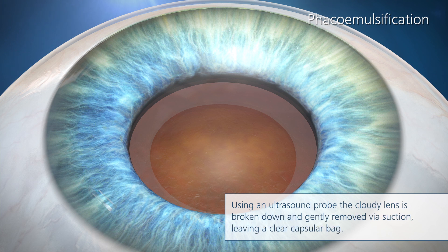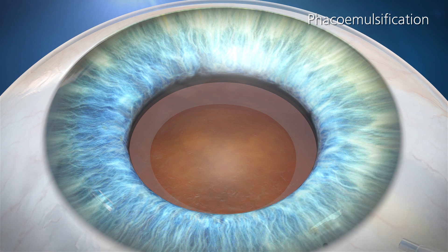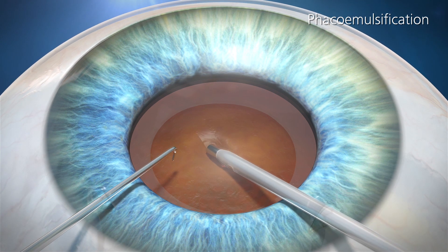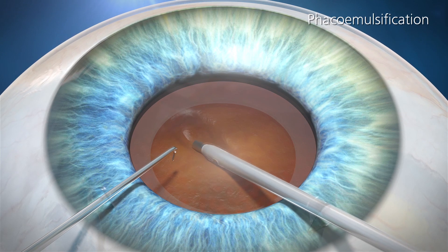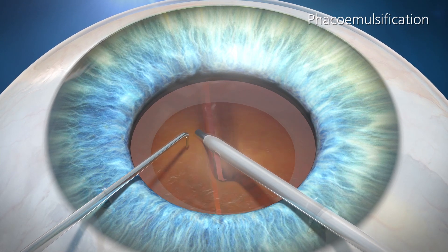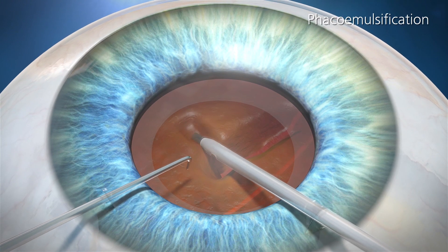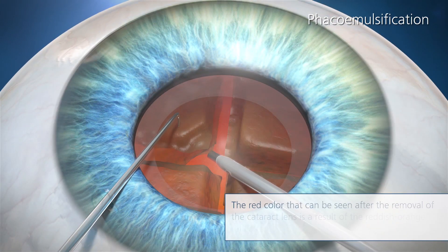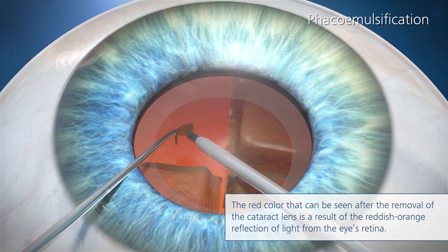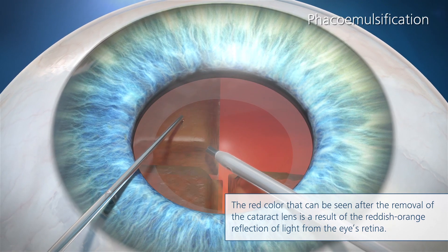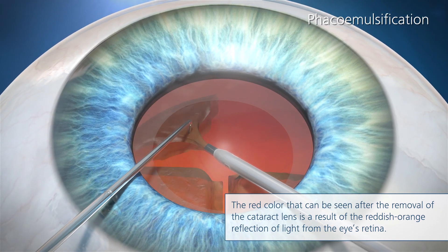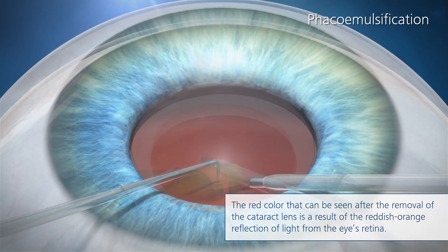Using an ultrasound probe, the cloudy lens is broken down and gently removed via suction, leaving a clear capsular bag. The red color that can be seen after the removal of the cataract lens is a result of the reddish-orange reflection of light from the eye's retina.